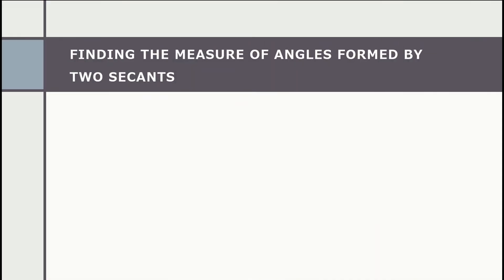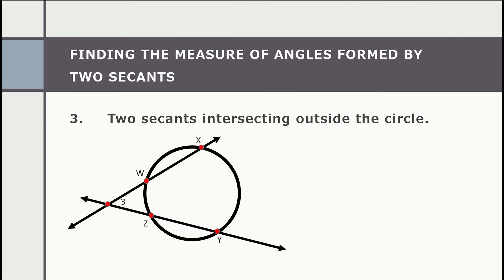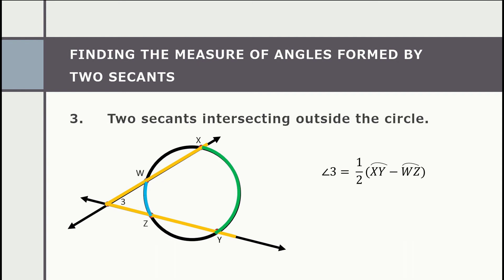Number three: two secants intersecting outside the circle. Its formula is like those angles formed outside the circle — we subtract the two intercepted arcs before multiplying by one half. In the given example, to get the measure of angle three, our formula is one half multiplied by the difference of the measure of arc XY and arc WZ.